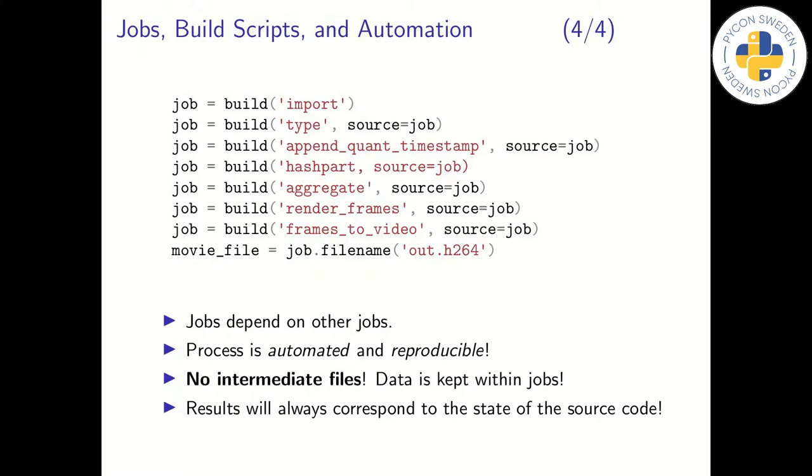Jobs are built using so-called build scripts and here we show a slightly simplified example of a build script. Each build call returns a python object with a set of methods useful for extracting information and data from the job. We can see that typically each build call inputs the return job object from the previous build so that the next job can use results computed by the previous jobs. The process is automated and there are no intermediate files to be seen anywhere since all resulting files are stored inside job directories.